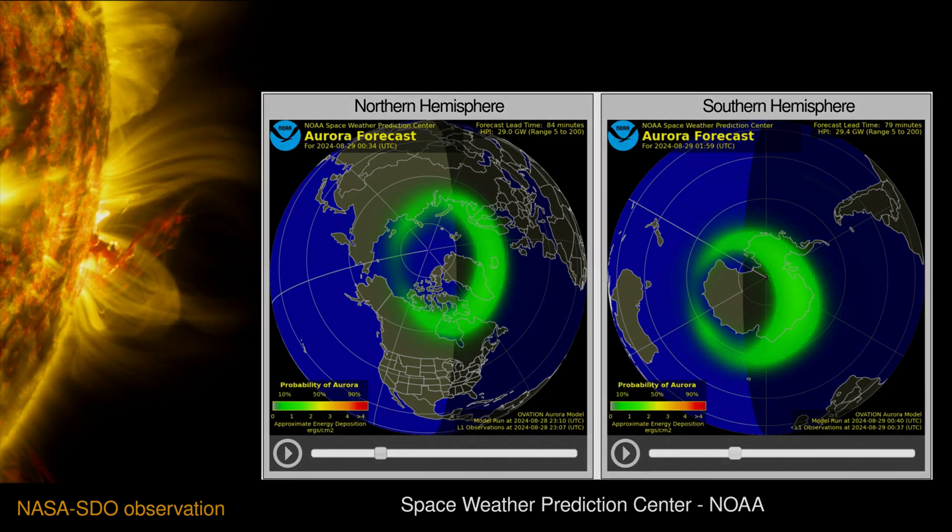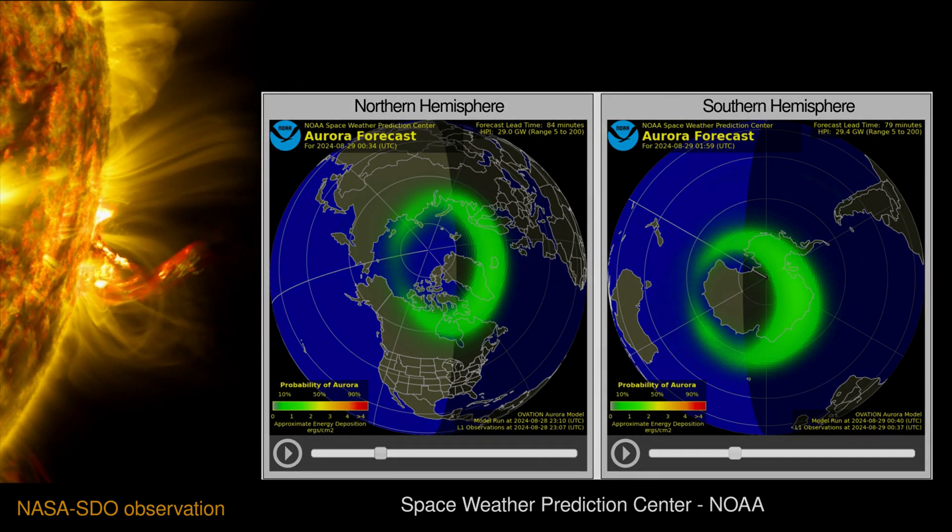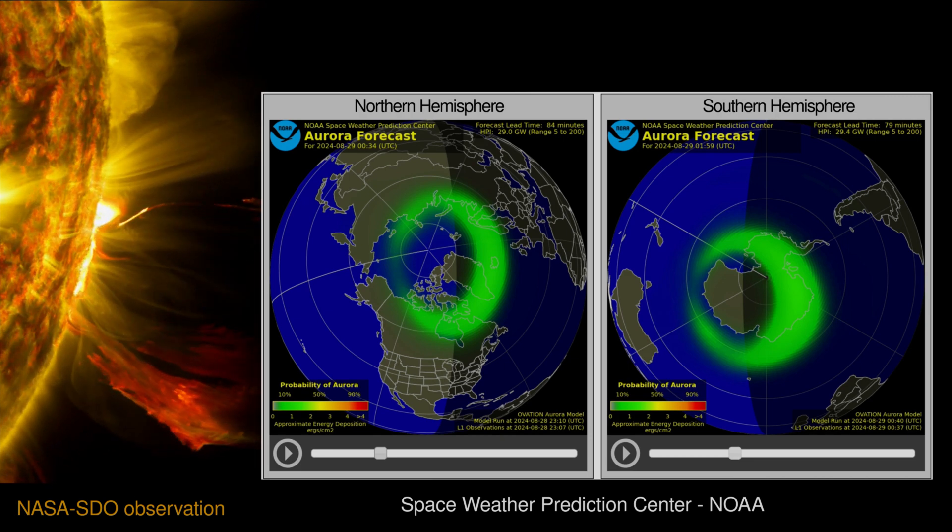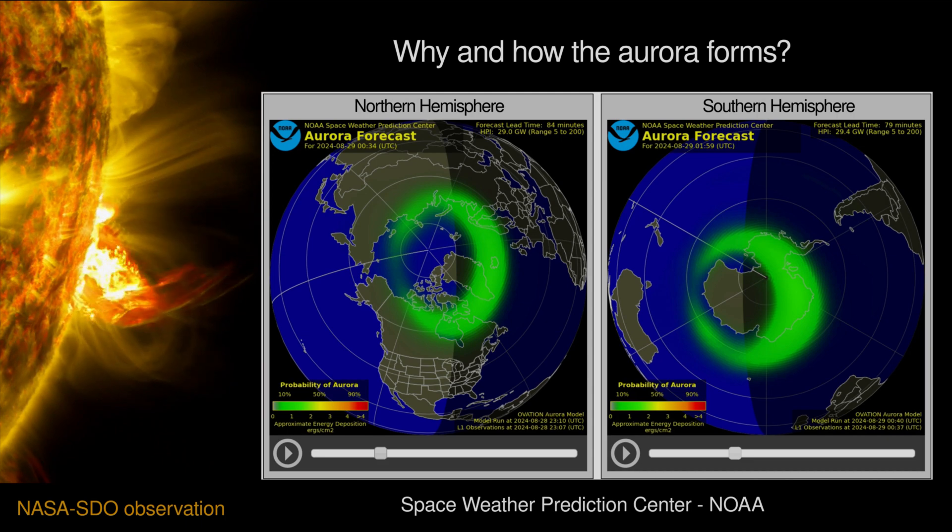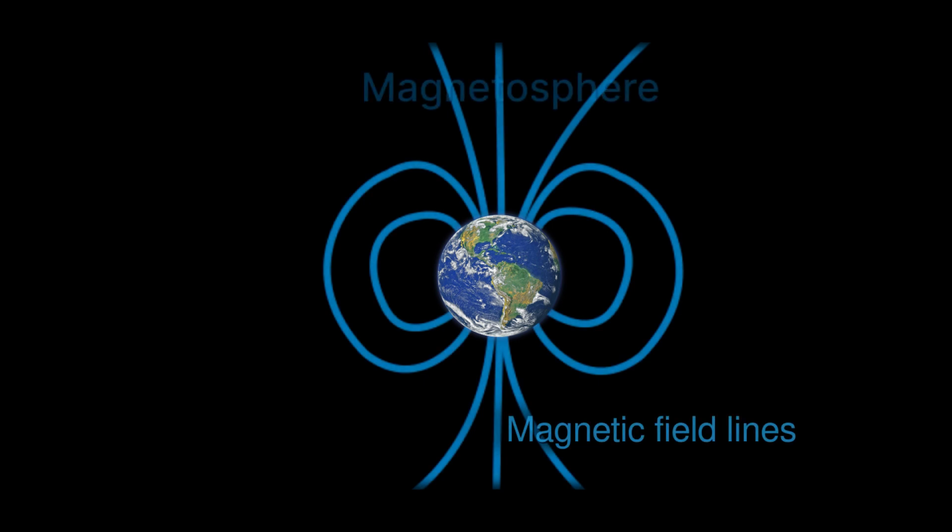Aurorae are brighter when our Sun is more active in generating flares. In this video, we will discuss why and how the aurora forms.